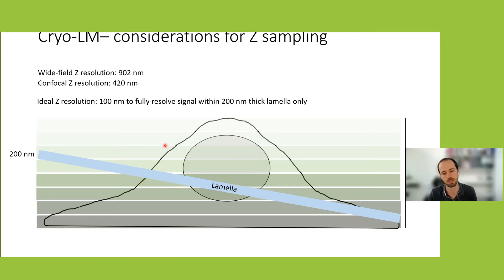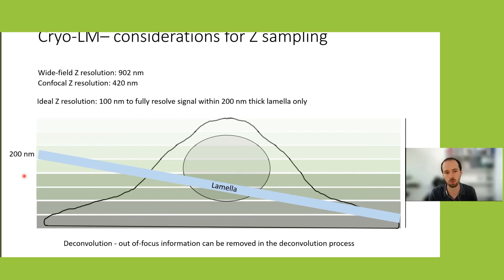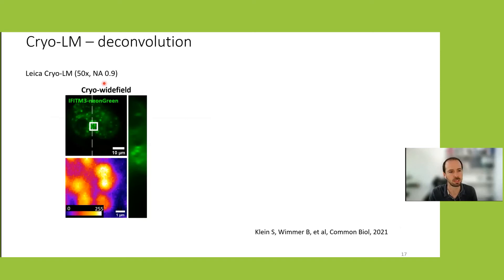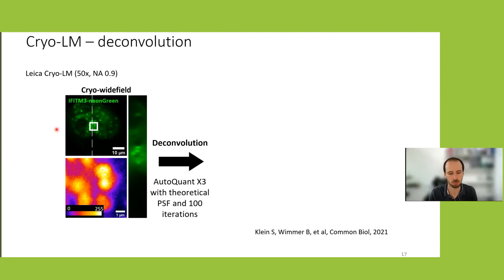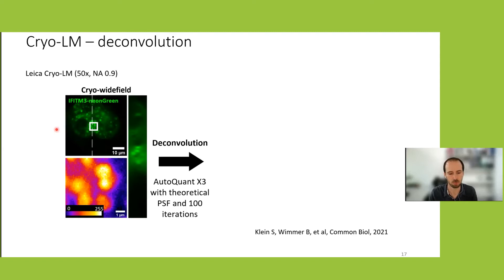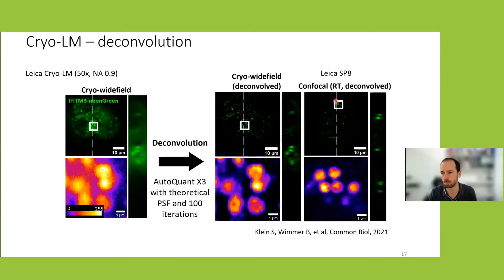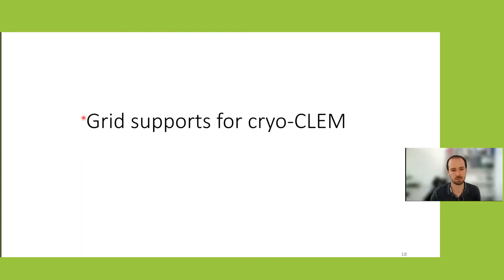Since we have only a widefield microscope, we use deconvolution to remove out-of-focus information, which really helps increase Z resolution and improve targeting precision. Here is an example: an A549 cell overexpressing a NeonGreen-tagged protein. After deconvolution in AutoQuant, the resolution improves significantly — the result is almost comparable to a confocal microscope. This is really important for CryoCLEM milling and it helps substantially.